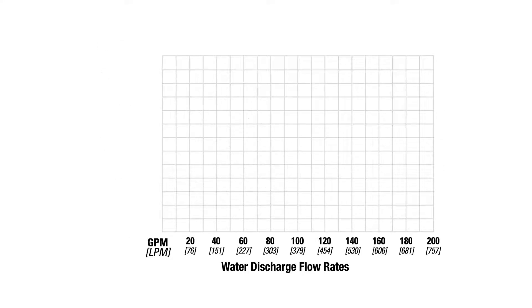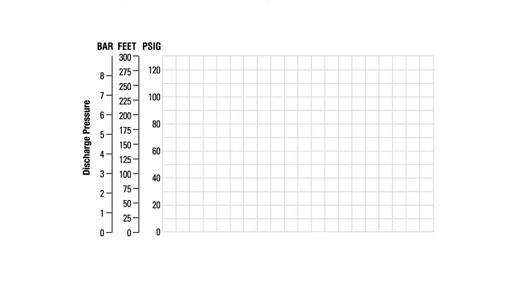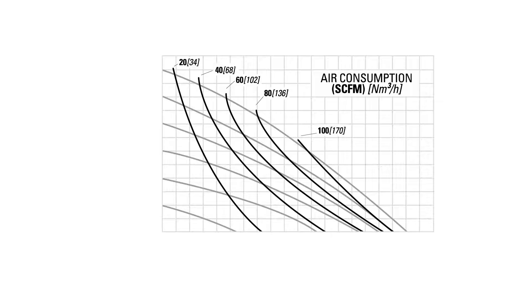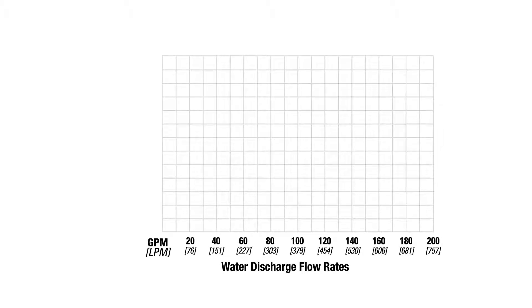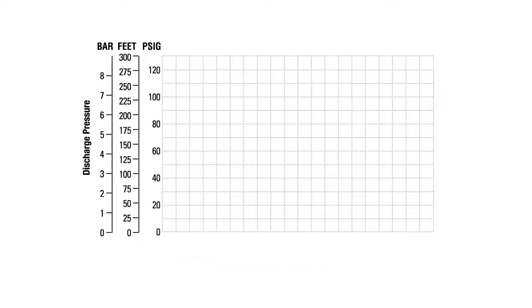A horizontal axis, a vertical axis, and a curved axis. The horizontal axis represents the pump's discharge flow rates in gallons per minute or liters per minute. The vertical axis represents the pressure, which in an AODD pump can correspond to two parameters: air inlet and outlet pressure in PSIG and bar, or the total head in feet.